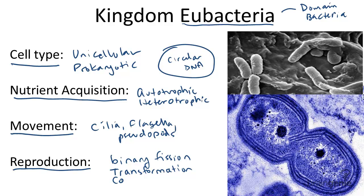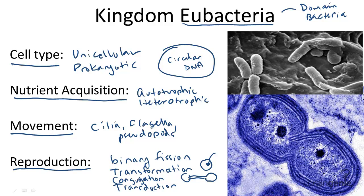Transformation, conjugation, and transduction. Transformation is when a bacteria picks up DNA from the environment. Conjugation is when there is a bridge, called a pilus, where DNA is passed to another. Transduction is when a virus actually infects a bacteria and transfers its DNA from one bacteria to another.